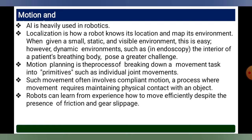Motion planning is the process of breaking down a movement task into primitives such as individual joint movements. Such movement often involves compliant motion, a process where the movements require maintaining physical contact with an object. Robots can learn from experience how to move efficiently despite the presence of friction and gear slippage.